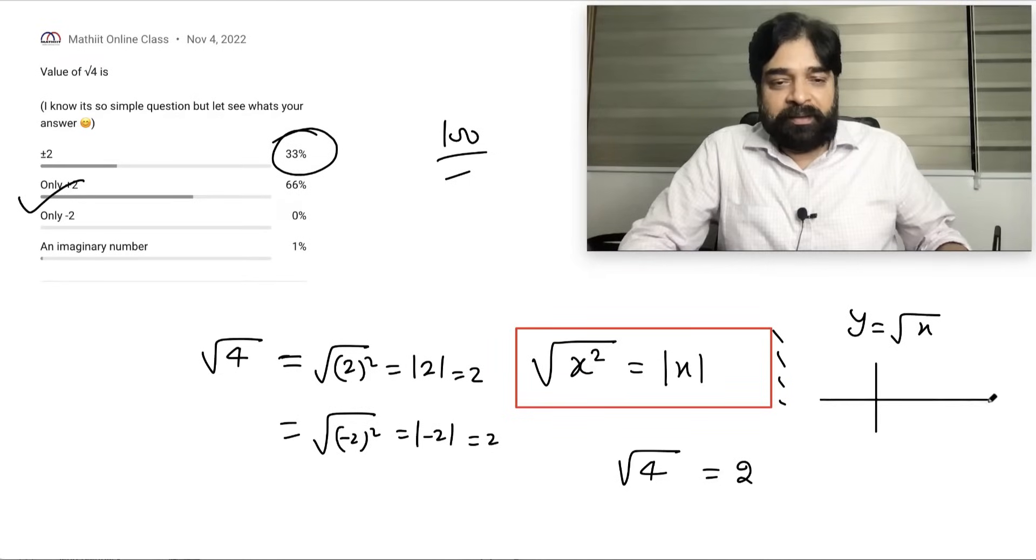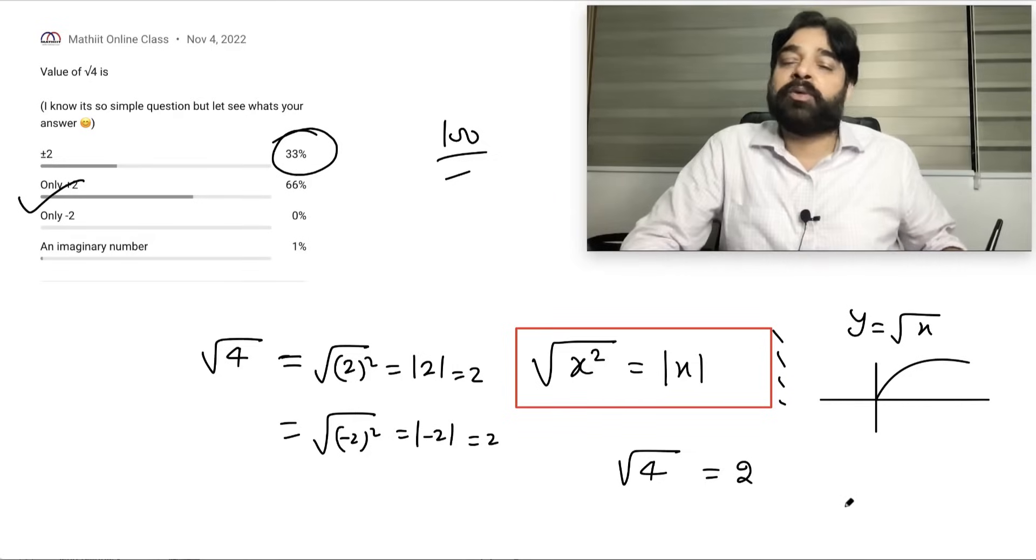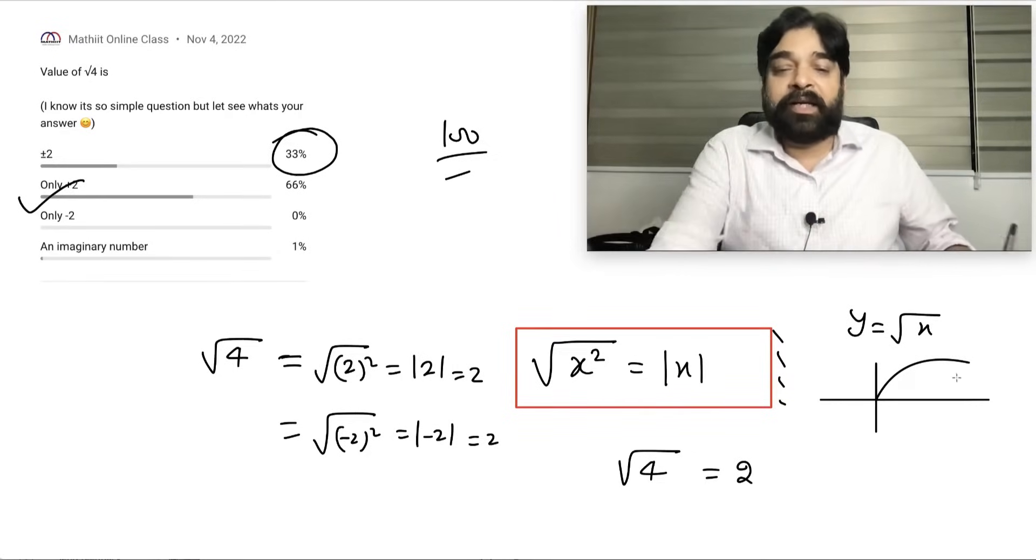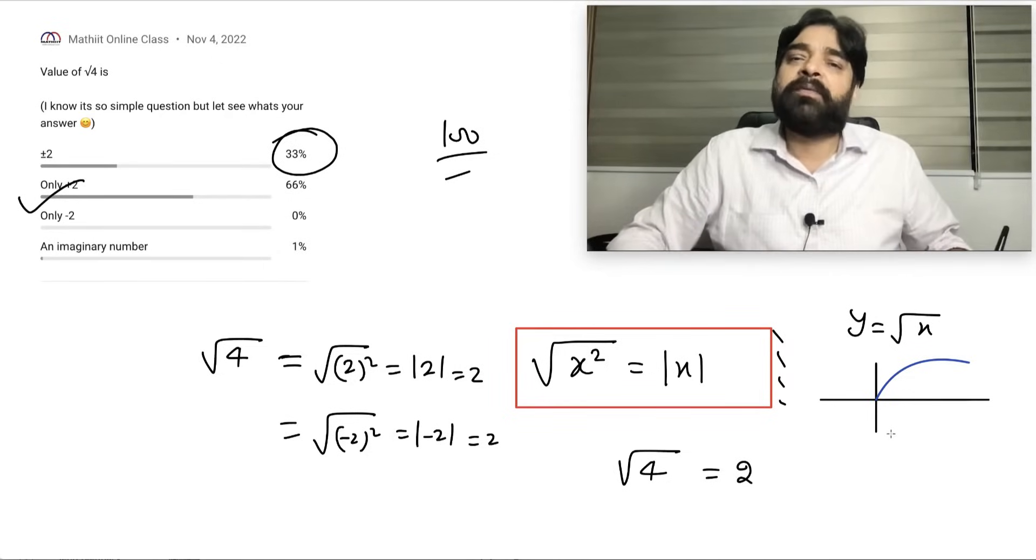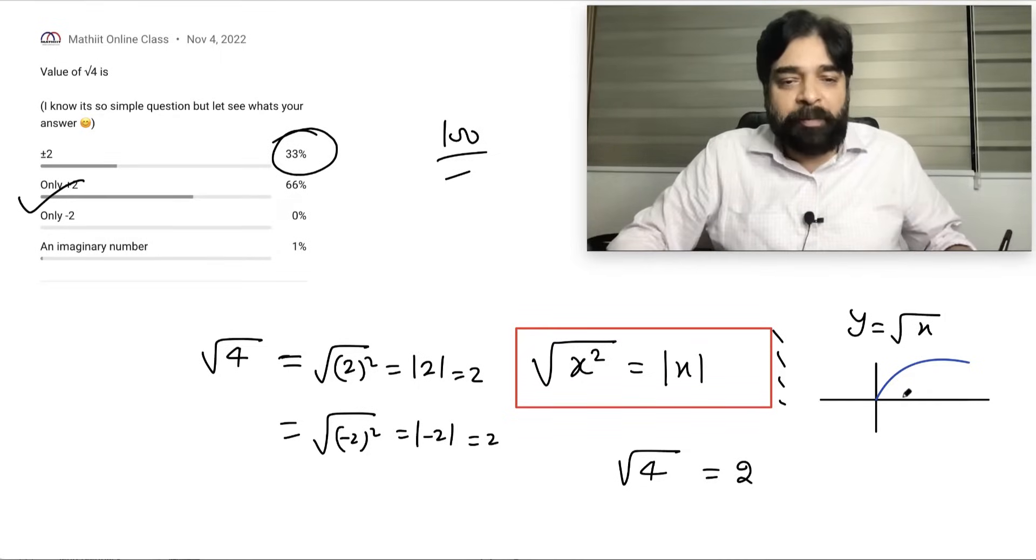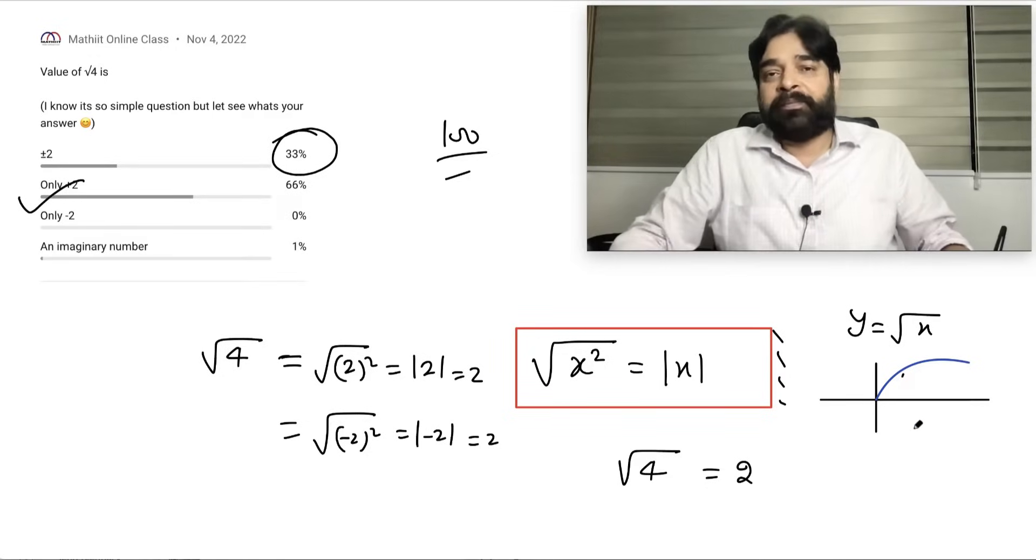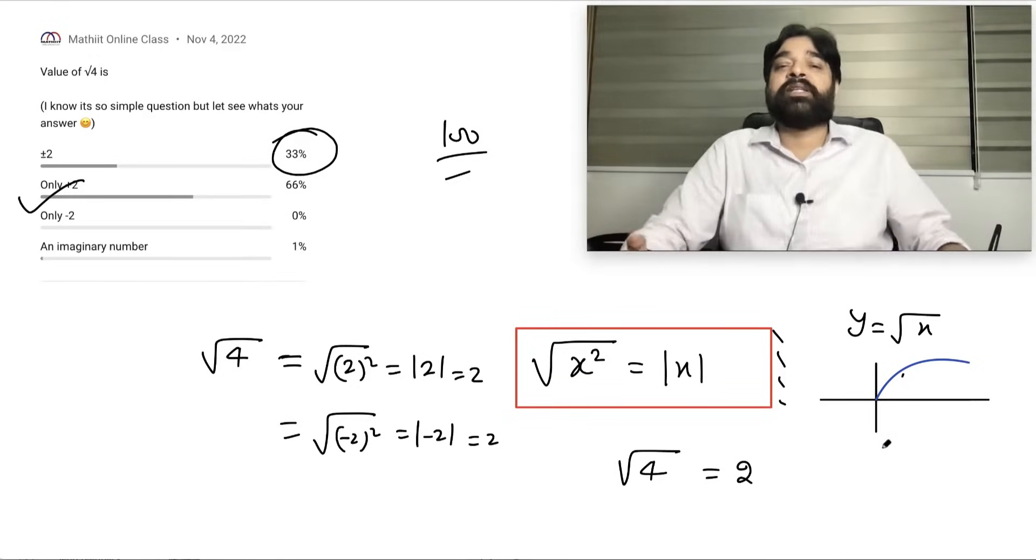And square root of x square is always mod x. And one more thing, y equal to root x graph is always like this. This is the graph of y equal to root x. You can see very clearly that this graph is saying I will be always positive. It never be negative. Whatever x value you put it will always give you positive value of y.